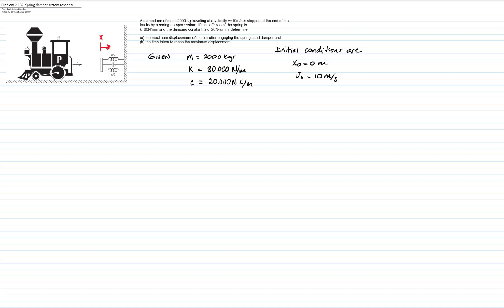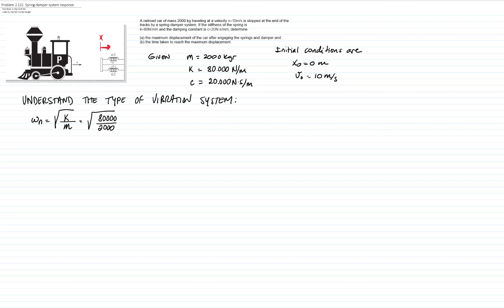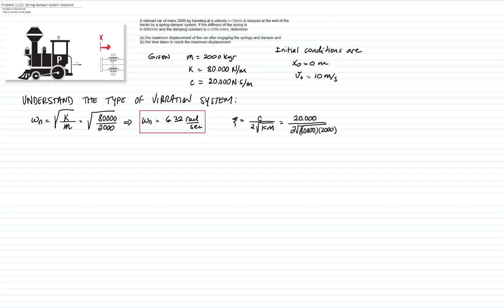Now we need to understand the type of system this involves. We have the spring constant, the mass, and the damping constant, so we can calculate the natural frequency, defined as the square root of k over m. In this case that is the square root of 80,000 divided by 2000, giving a natural frequency of 6.32 radians per second. We can also calculate the damping ratio, defined as c divided by 2√(km), which is 20,000 divided by 2 times √(80,000 × 2000), giving a damping ratio of 0.79.